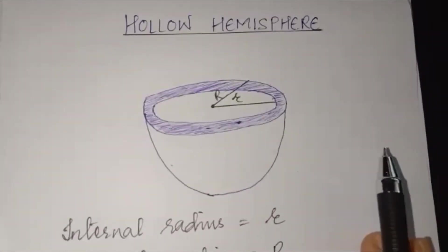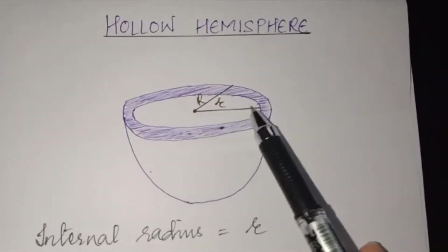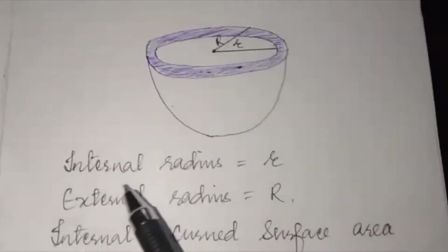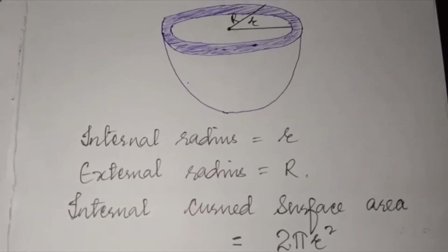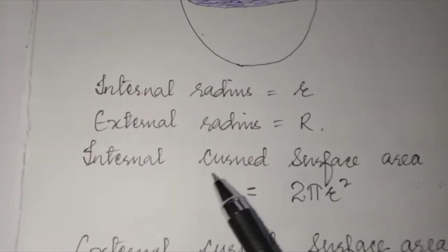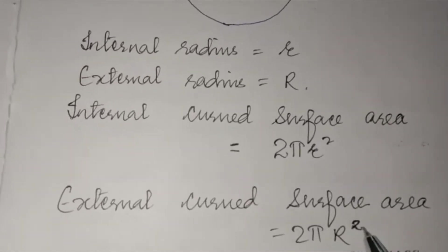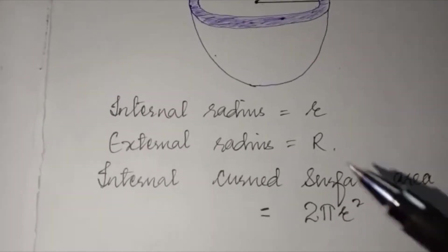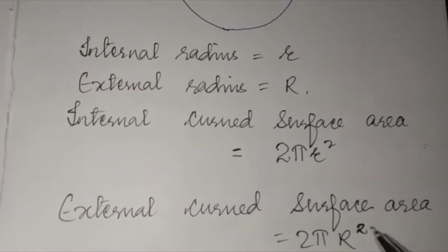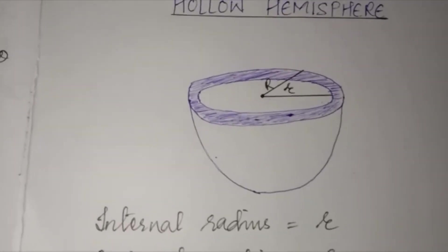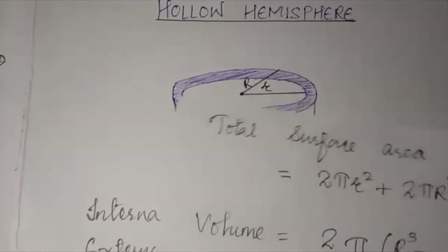Before starting question 9, here is the formula for a hollow hemisphere. Take the example of a bowl — a hollow hemisphere has two radii: internal radius small r and external radius capital R. It has an internal curved surface area of 2πr² and an external curved surface area of 2πR². For total surface area, you also need to add the area of the ring at the rim.